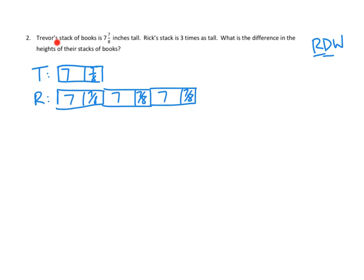Let's see if that's right. Trevor's stack of books is 7 7⁄8 inches tall, that's that. Rick's stack is three times as tall. One, two, three. Good. And now let's see, let's get to the question. What is the difference in the heights of the stacks of their books? I see. They don't want the total heights, they want the difference. Rick's is this tall, Trevor's is this tall, and they want the difference. So they want this amount. How much more?